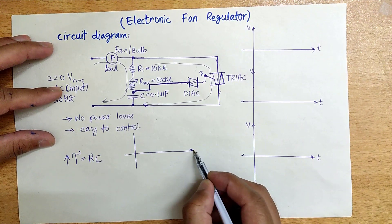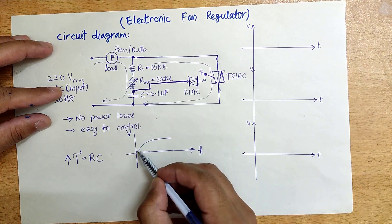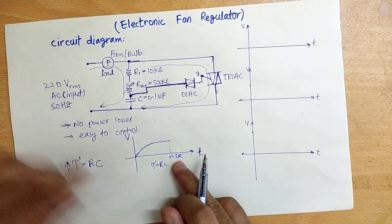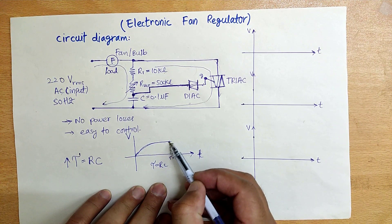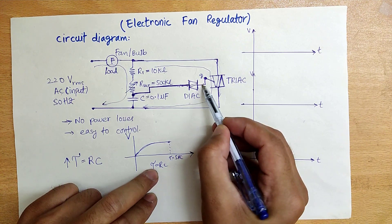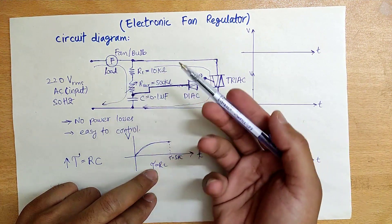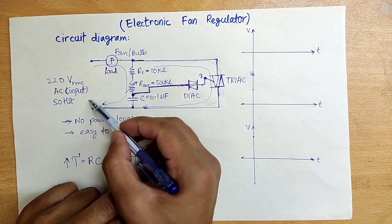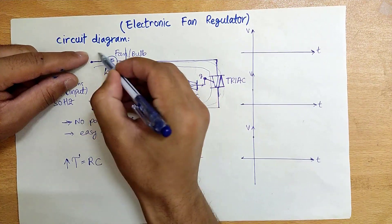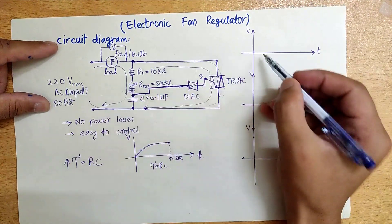Looking at the capacitor charging plot: as time passes, the capacitor voltage rises. After one time constant RC, the capacitor charges, and at five time constants it reaches a specific value. If that value is more than the breakdown voltage of the DIAC, then the gate of the TRIAC gets a signal, the TRIAC turns on, and the load current in amperes passes through the fan, through the TRIAC, and back.